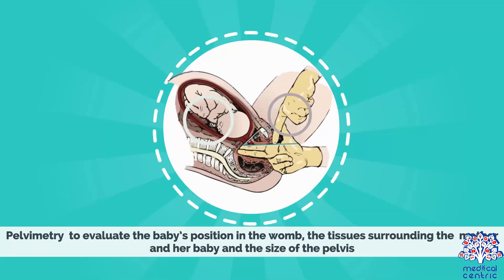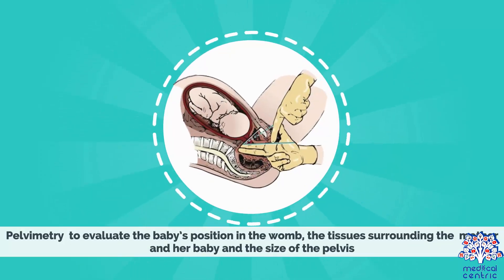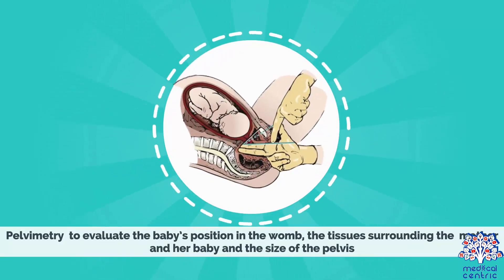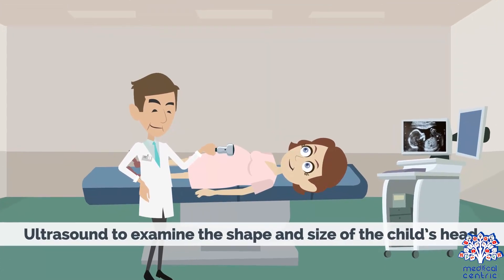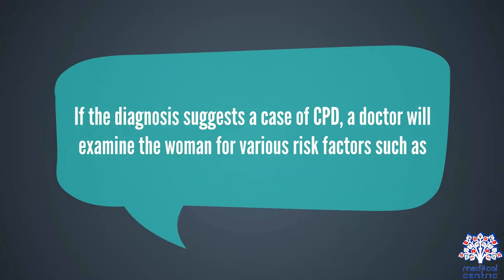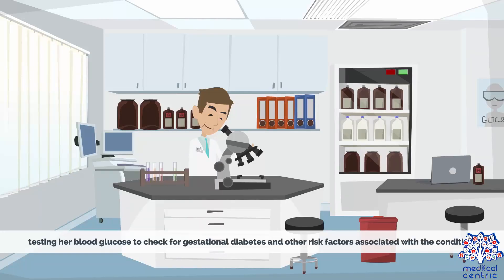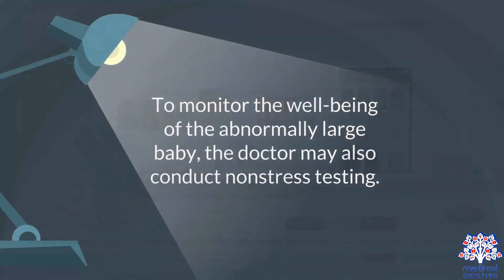Diagnosis of CPD involves pelvimetry, used to evaluate the baby's position in the womb, the tissues surrounding the mother and her baby, and the size of the pelvis. Ultrasound is used to examine the shape and size of the child's head. If CPD is suspected, a doctor will examine the woman for risk factors such as testing her blood glucose to check for gestational diabetes. To monitor the well-being of the abnormally enlarged baby, the doctor may also conduct non-stress testing.